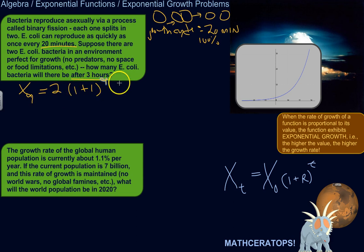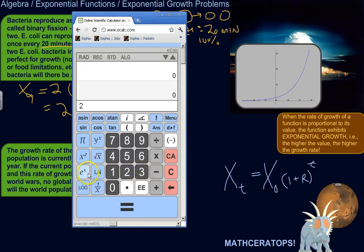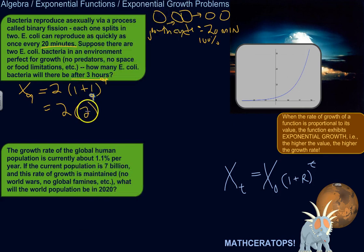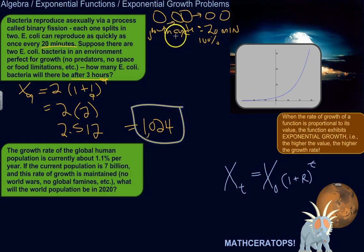So raised to the power of the number of growth cycles. So two to the ninth. So let's just two times two to the ninth. So two to the ninth will be, what is that, two to the ninth is 512. So two times 512, so it would be 1,024. So after three hours, you just start with two E. coli bacteria. They've reproduced themselves, and now there's 1,024 of them.